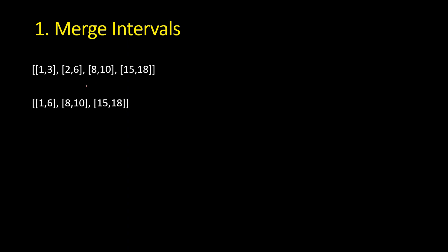The first problem is Merge Intervals. You are given a list of intervals, where each interval has a beginning and an end. For example, 1-3 means it starts at 1 and ends at 3, and 2-6 means it starts at 2 and ends at 6. You have to merge the overlapping intervals — 1-3 and 2-6 overlap, so you merge them into 1-6.